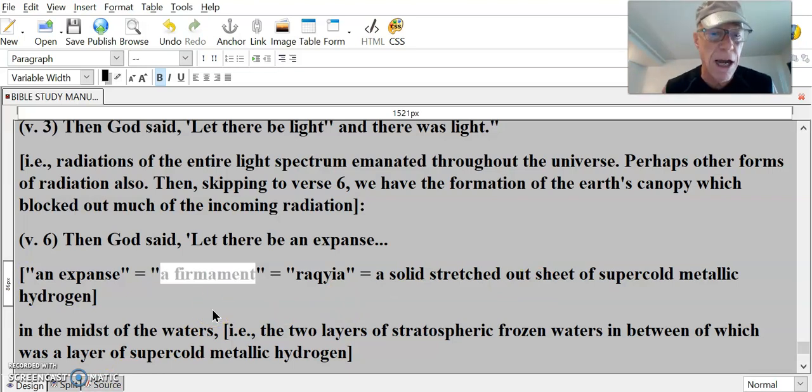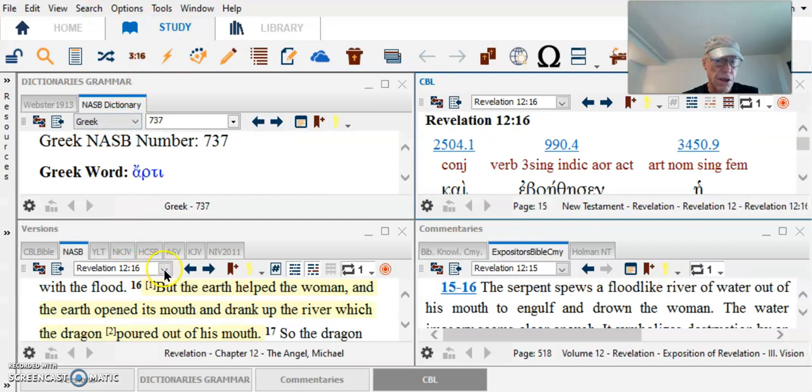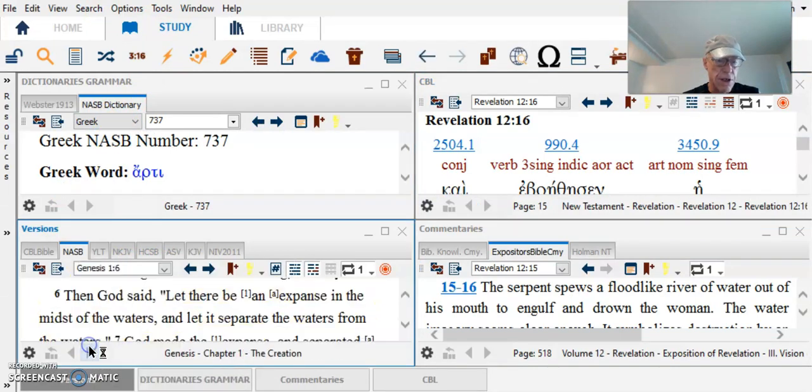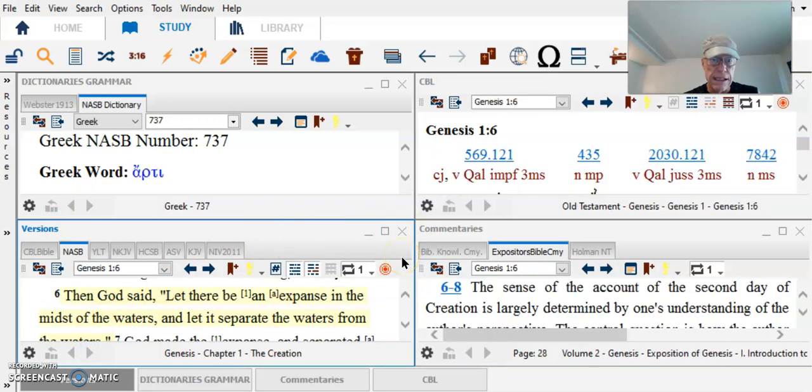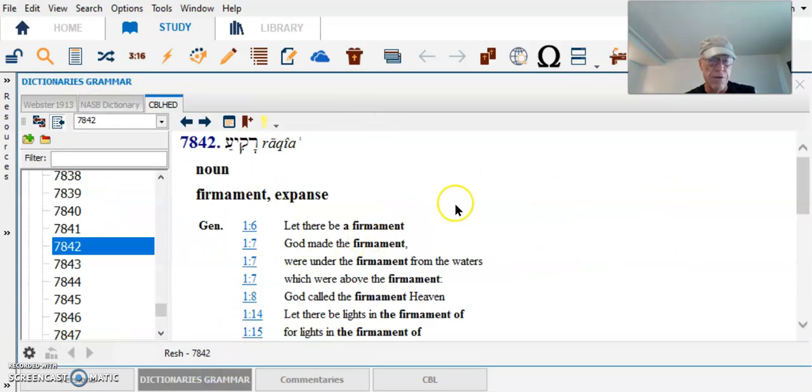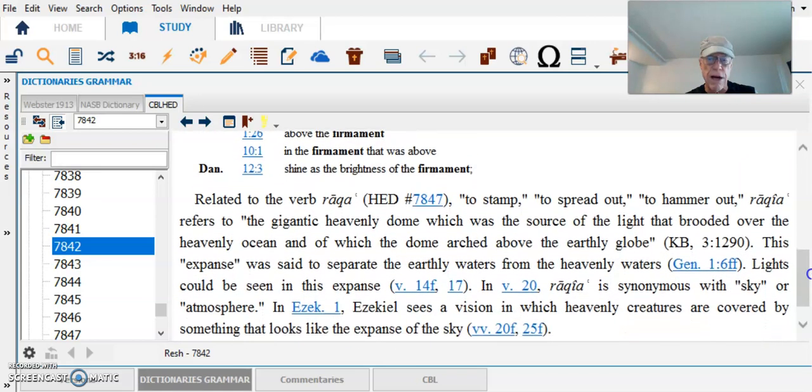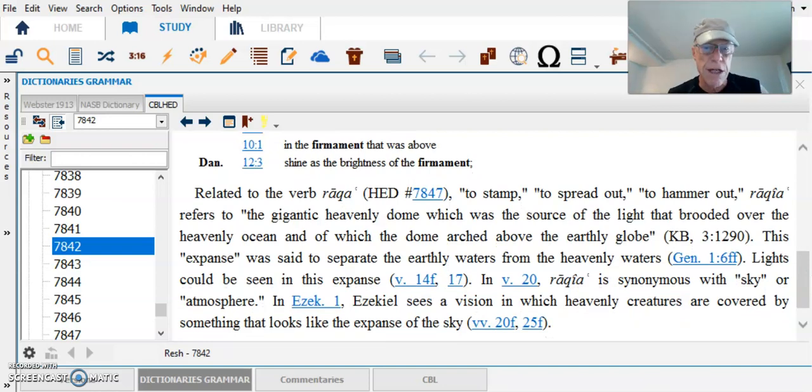So, to repeat, then God said, let there be an expanse. Genesis 1:6. I want to take a look at this. Rakia. Firmament. Related to rakia. Stamps spread out, hammer out, refers to the gigantic heavenly dome, which was the source of the light that brooded over the heavenly ocean, and of which the dome arched above the earthly globe. And its expanse. Sounds like a metallic thing.